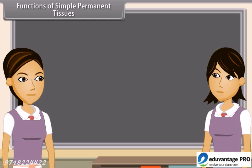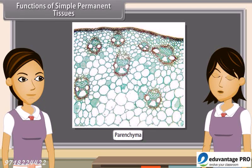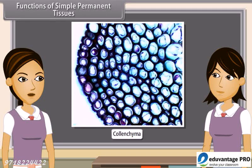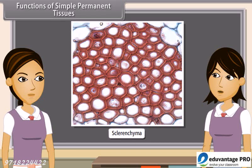Parenchyma serves as a packaging tissue to fill the spaces between other tissues and maintain the shape of the plant. Due to its turgid cells, it also stores and assimilates food. Transport of material occurs through cells or cell walls of parenchyma, and their intercellular spaces allow gaseous exchange. They also store waste products of plants like tannin, gum, resins, etc. Colenchyma is a mechanical tissue that provides mechanical support and elasticity. Sclerenchyma is mainly mechanical and protective in function — it gives strength, rigidity, flexibility, and elasticity to the plant body, enabling it to withstand various strains.